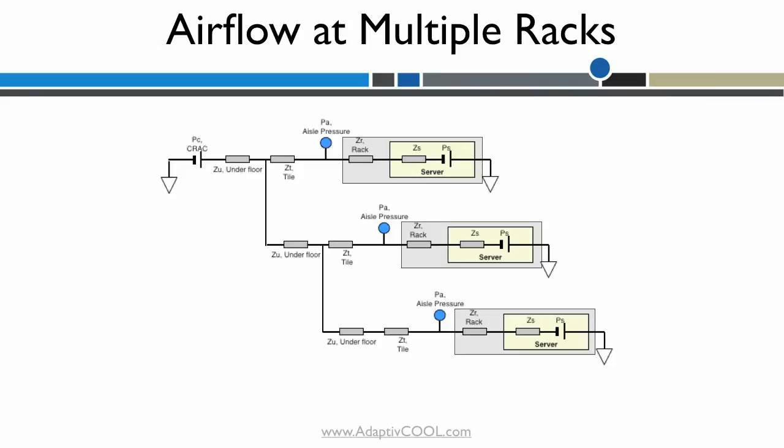The airflow availability also varies from the first to the third rack due to the difference in impedance. The first rack receives higher air flow than the last one.